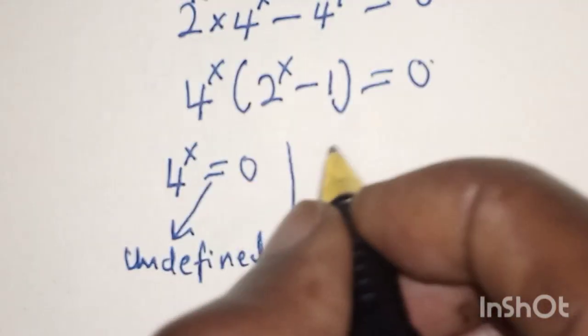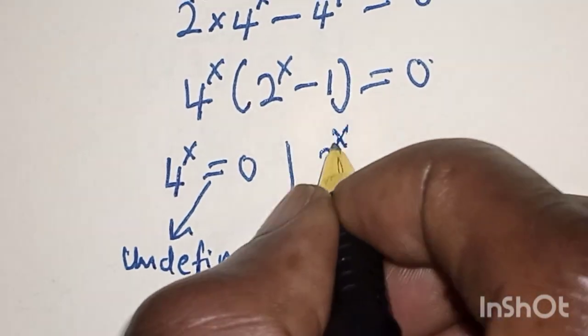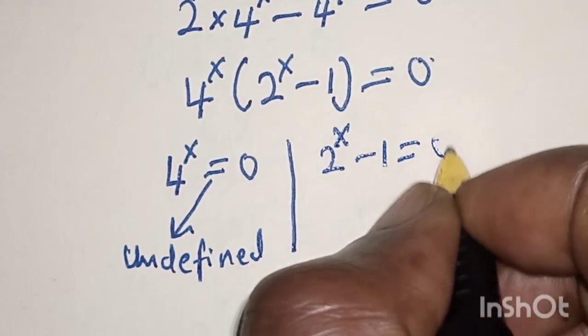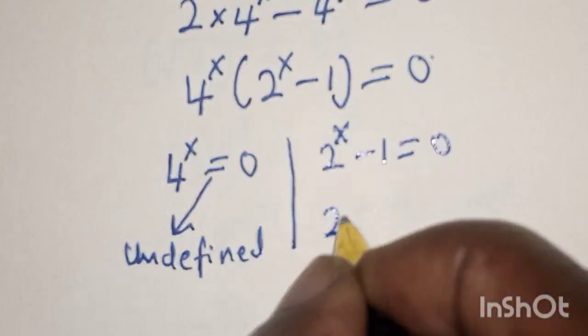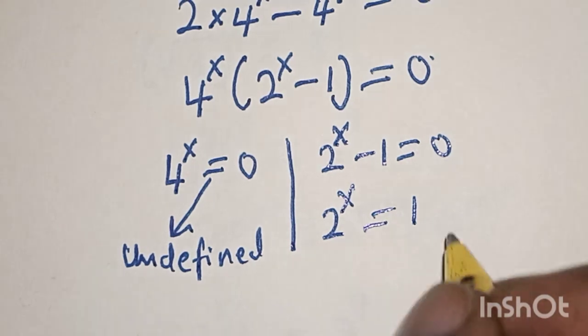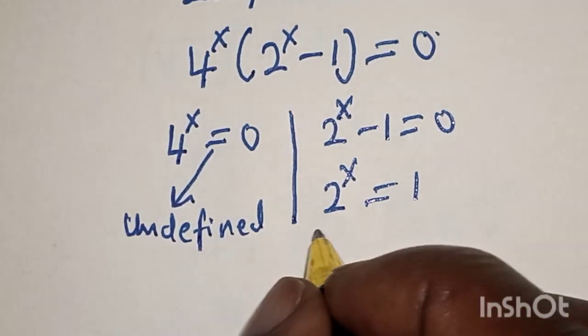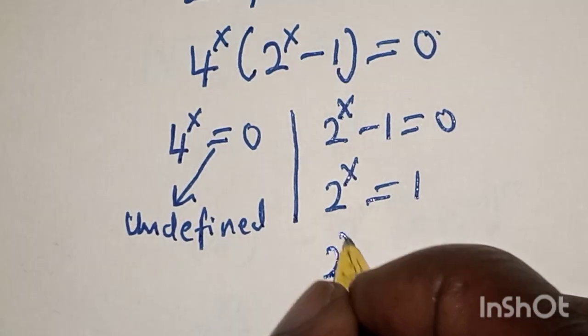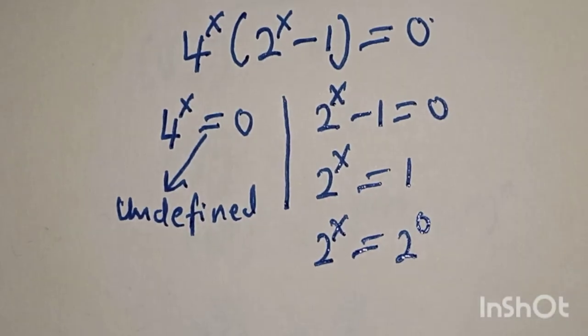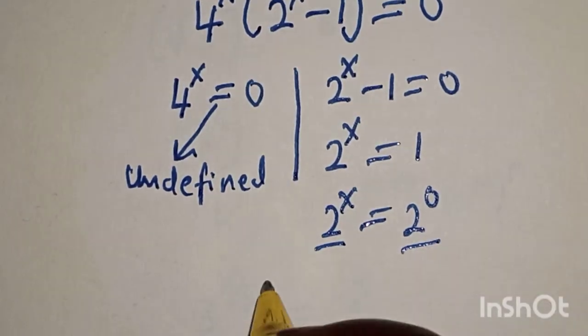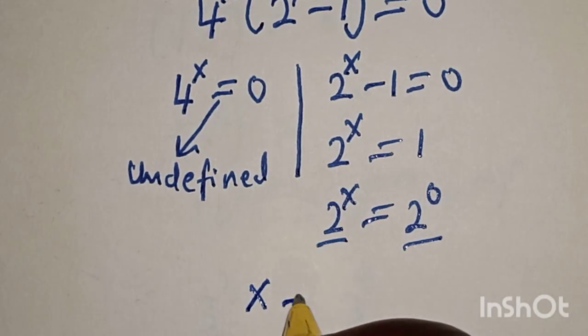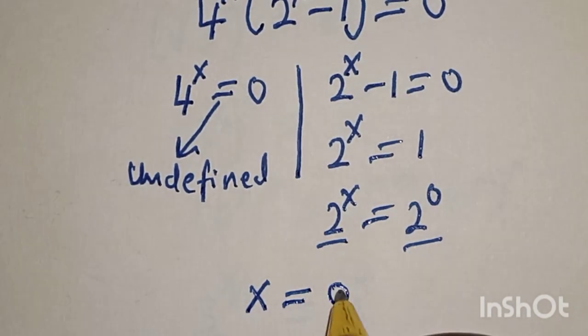So the second case is 2 raised to power x minus 1 is equal to 0. Now this is 2 raised to power x is equal to 1, and 1 is the same thing as 2 raised to power 0.